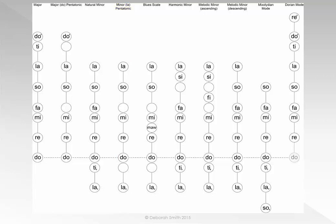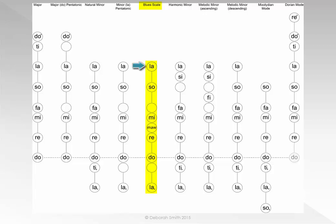If we take the minor or LA pentatonic scale and add a flattened fifth, you will have created the blues scale. LA DO RE ME SO LA — SO ME RE DO LA.